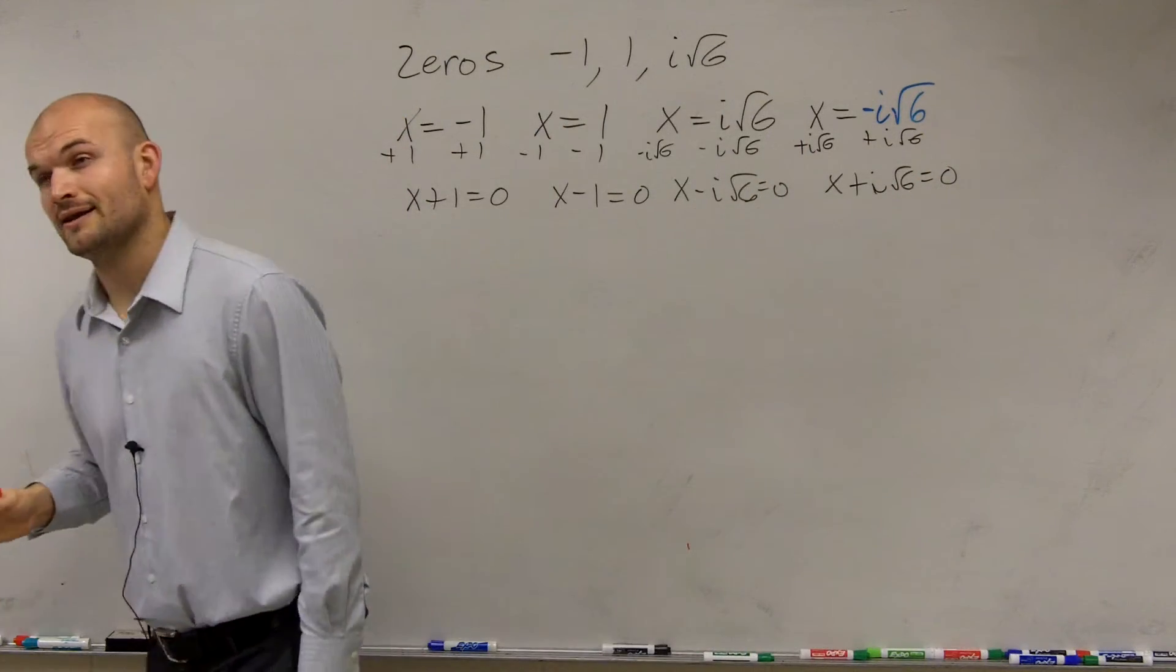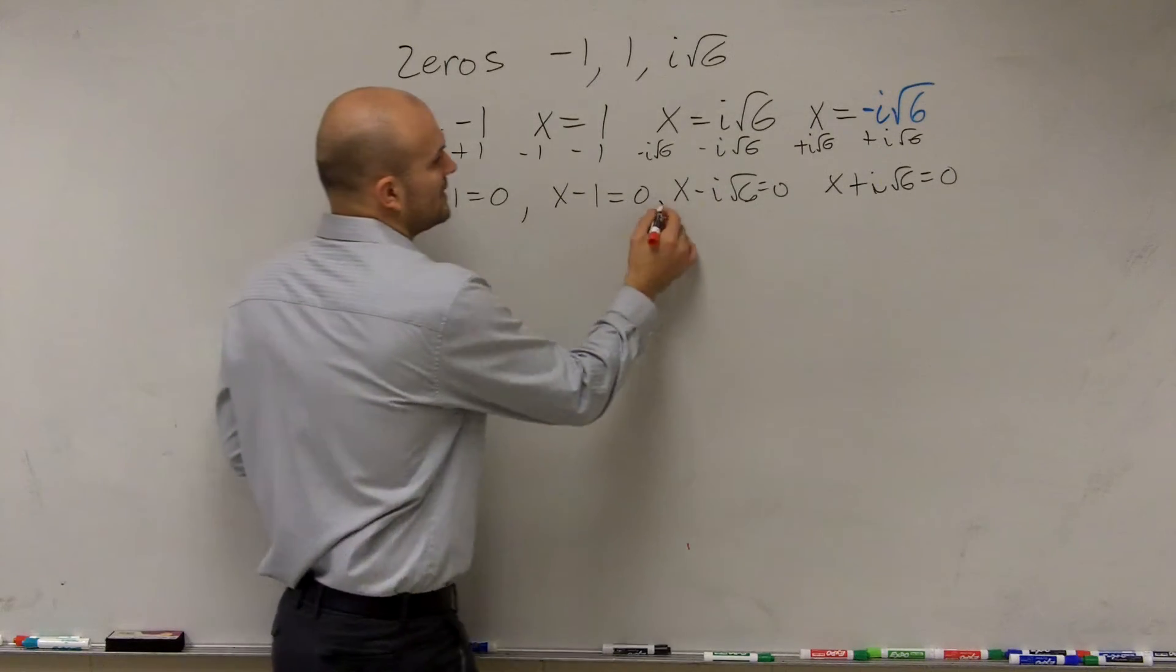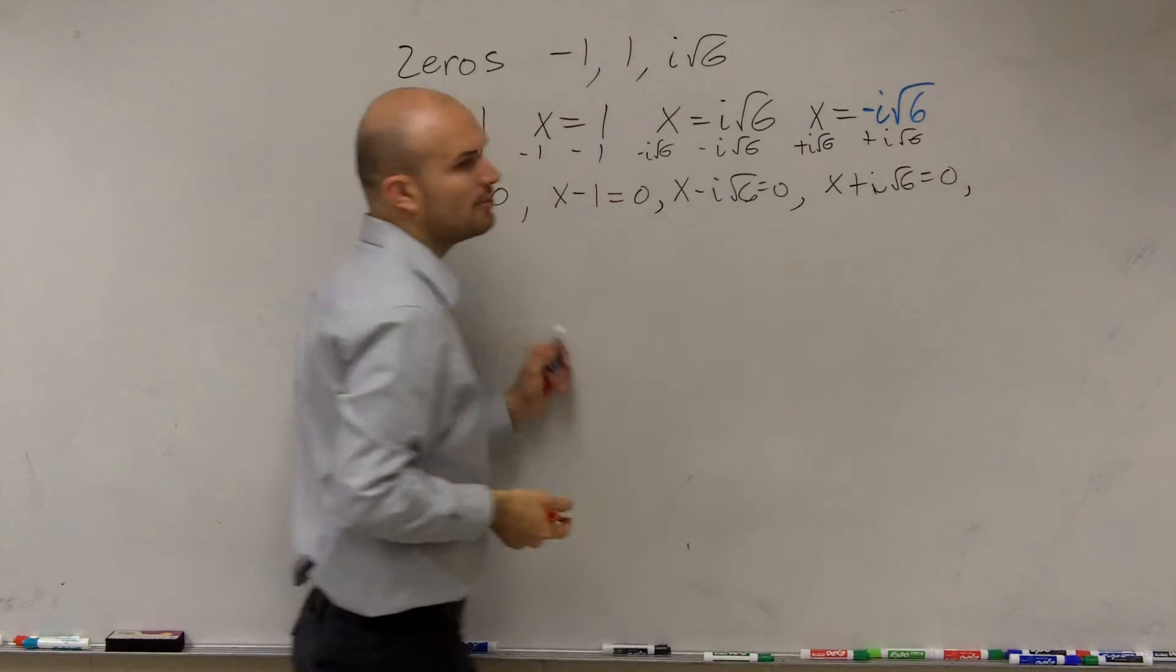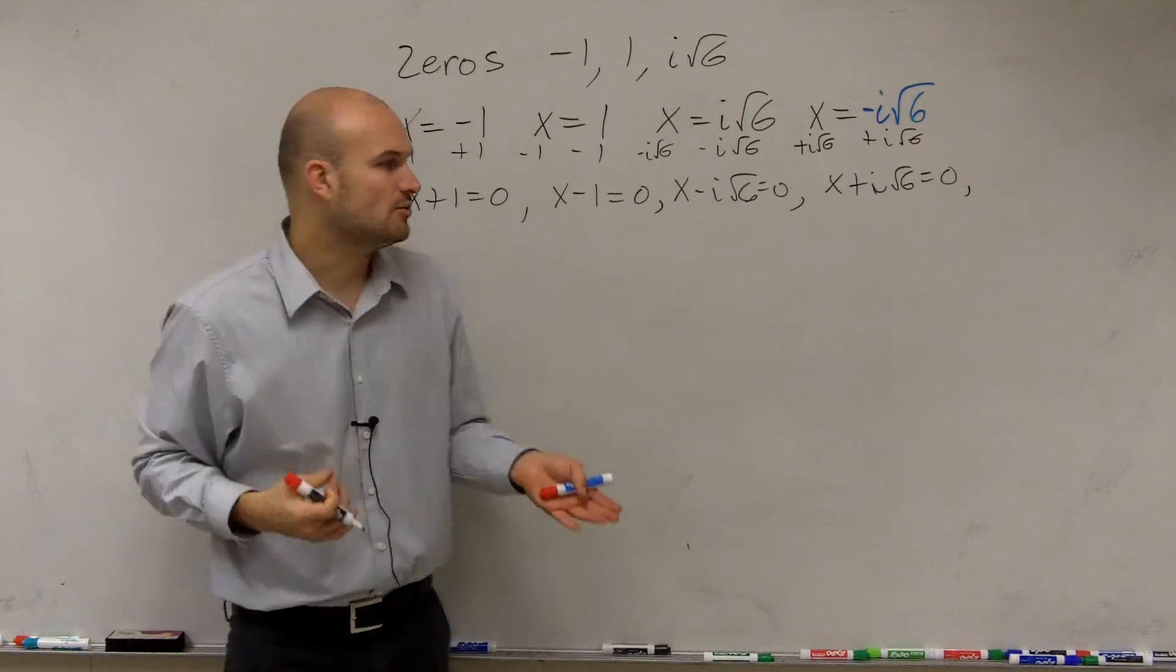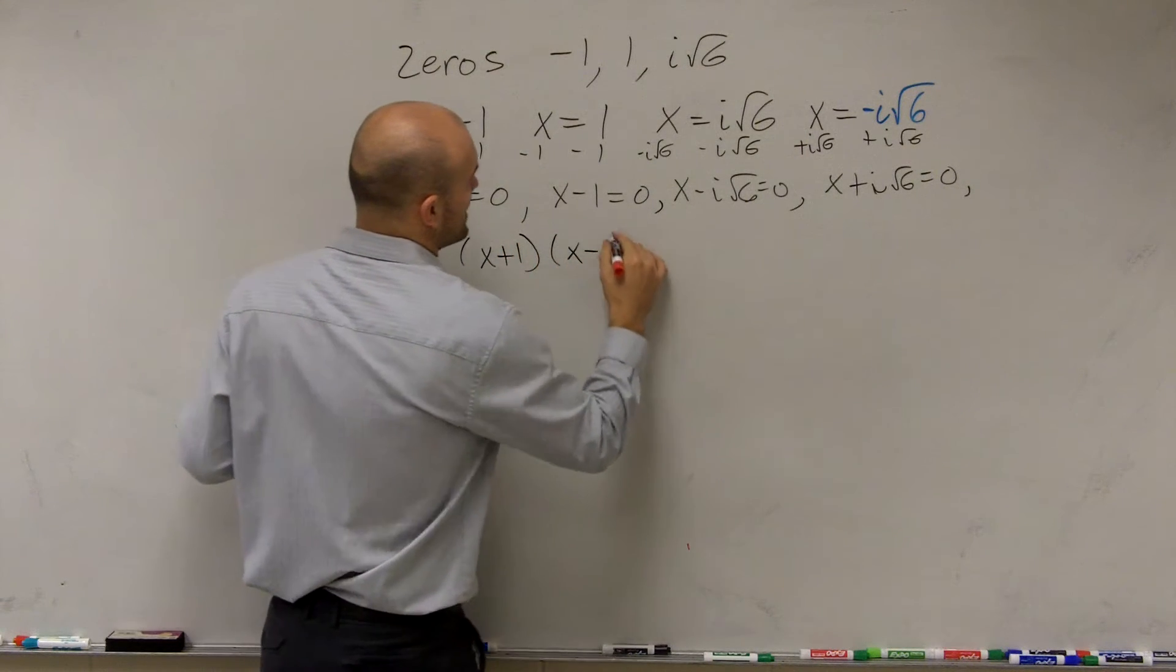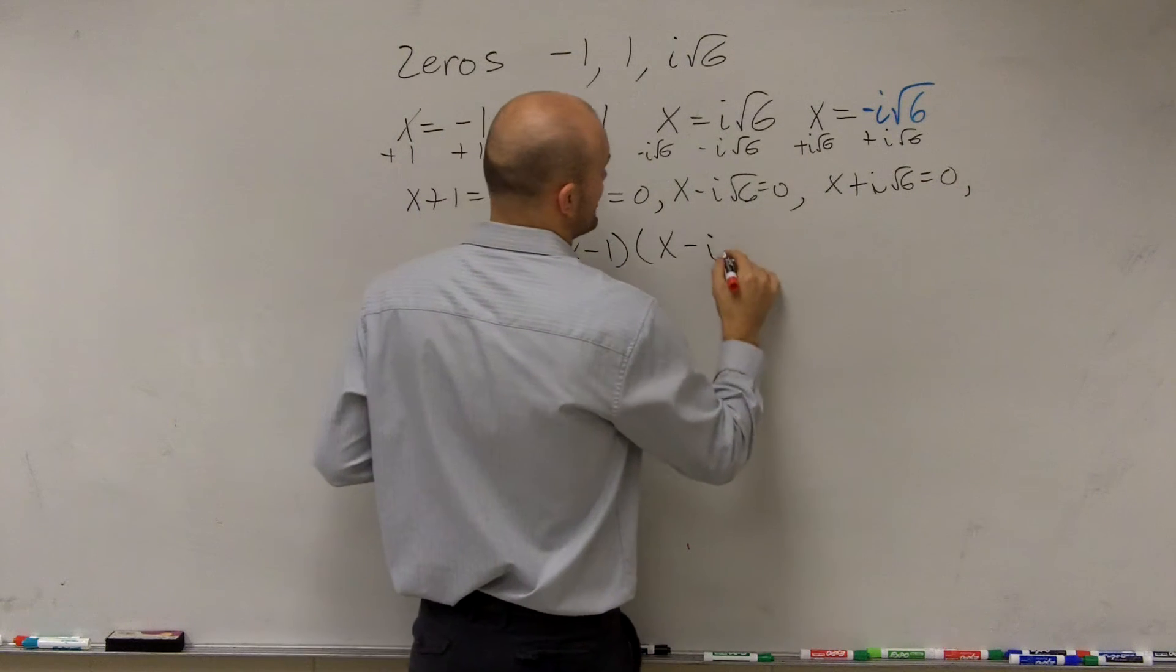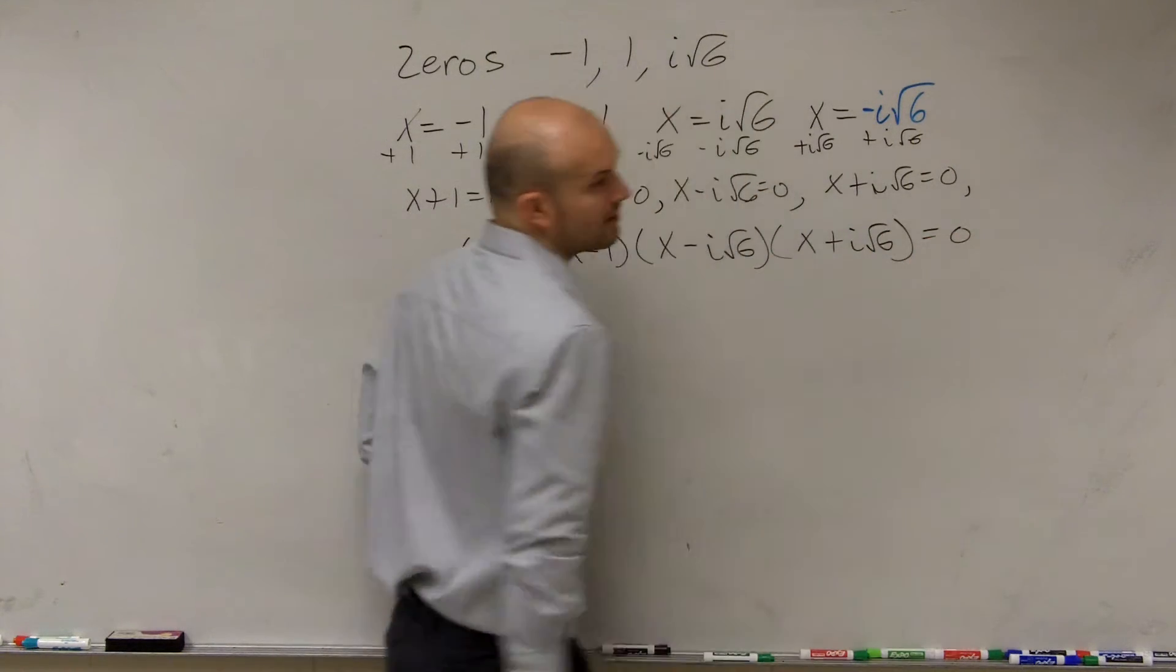So therefore, we got to this point, we say all these zeros, they all equal 0. But remember, where did we get to this? Well, we got to this by applying the zero product property. So what that means is x plus 1 times x minus 1 times x minus i square root of 6 times x plus i square root of 6 equals 0.